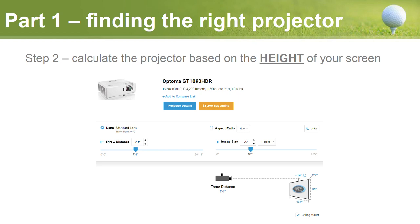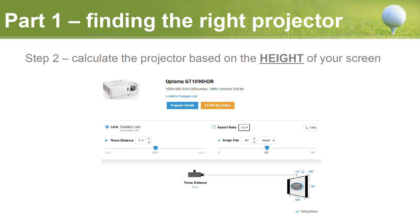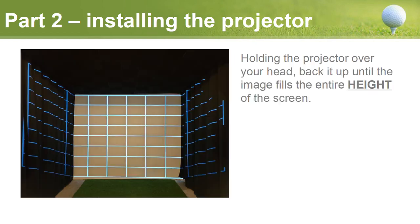A lot of people ask: if I change the aspect ratio to 4:3 will the throw distance change? I just changed it to 4:3 with the same image height and the throw distance is the exact same. All that's changing is the width of the image, so it really doesn't matter — leave the aspect ratio at 16:9 and we'll adjust the image later in Windows.